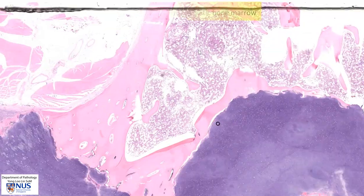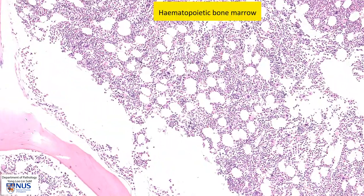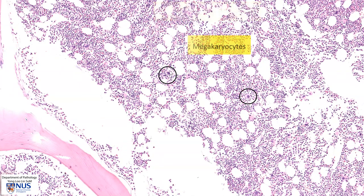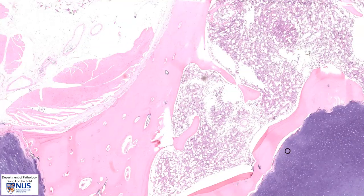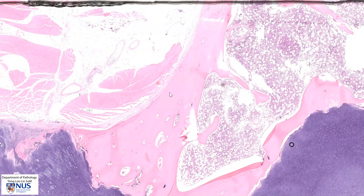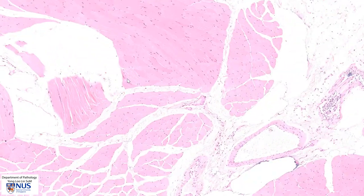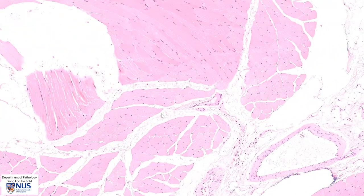There is a little bit of bone marrow here and there is ongoing hematopoiesis. These large cells with quite abundant cytoplasm and large nuclei are megakaryocytes. This is the bony cortex and this is the periosteum, and this is the surrounding skeletal muscle as well as adipose tissue.